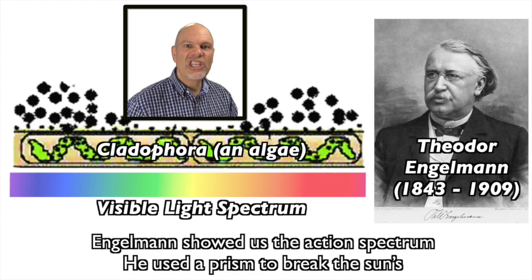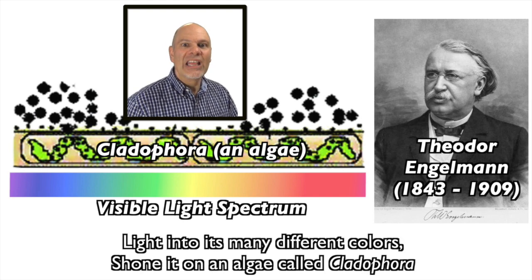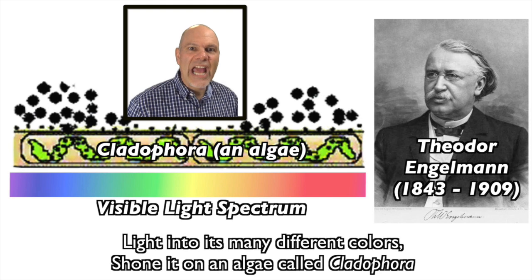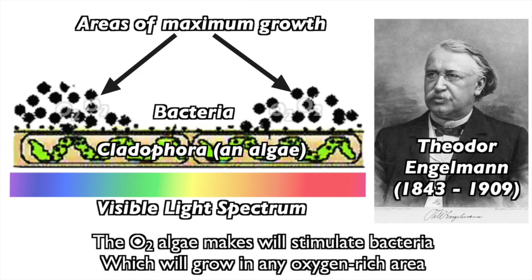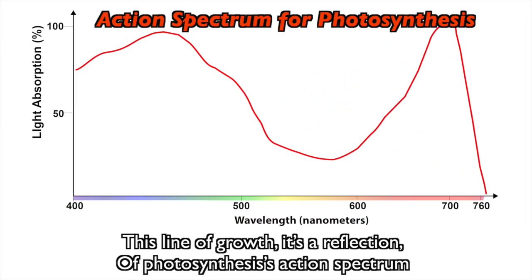Engelman showed us the action spectrum. He used a prism to break the sun's light into its many different colors, shining it on an algae called Cladophora. The O2 the algae makes will stimulate bacteria, which will grow on any oxygen-rich area. Bacteria loved it over blue and red, but hardly grew over green — they might as well be dead. This line of growth is a reflection of photosynthesis's action spectrum.